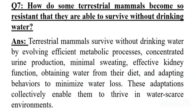Question number 7: How do some terrestrial mammals become so resistant that they are able to survive without drinking water? Answer. Terrestrial mammals survive without drinking water by evolving efficient metabolic processes, concentrated urine production, minimal sweating, effective kidney function, obtaining water from their diet, and adapting behaviors to minimize water loss. These adaptations collectively enable them to thrive in water-scarce environments.